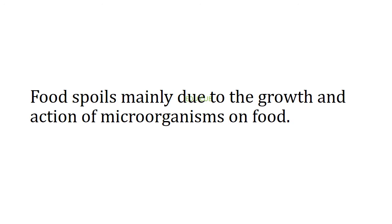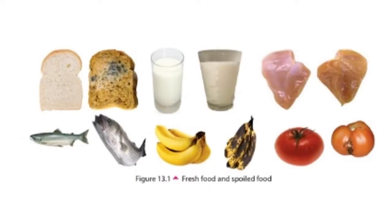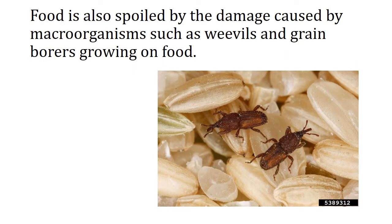Food spoils mainly due to the growth and action of microorganisms on food. Let's see some examples. Here you can see fresh food and spoiled food. Examples are curdling of milk, growth of mould on bread, spoilage of fish, and rancidity of coconut oil.